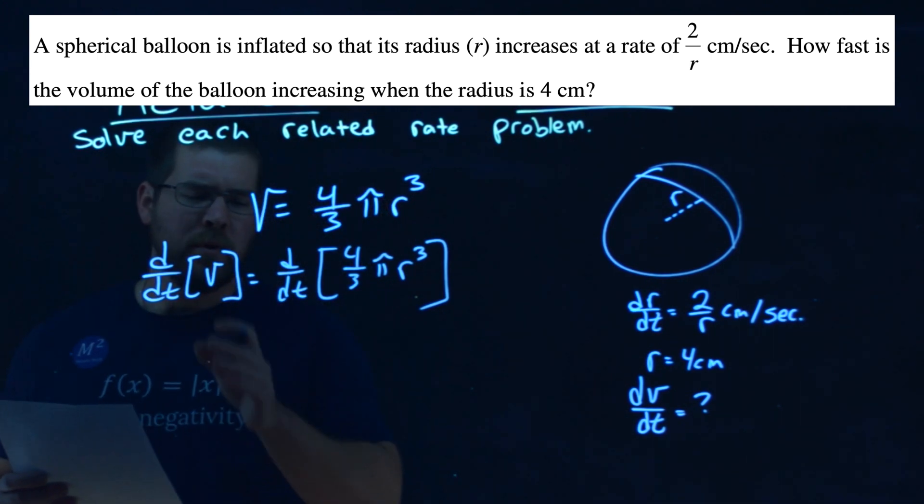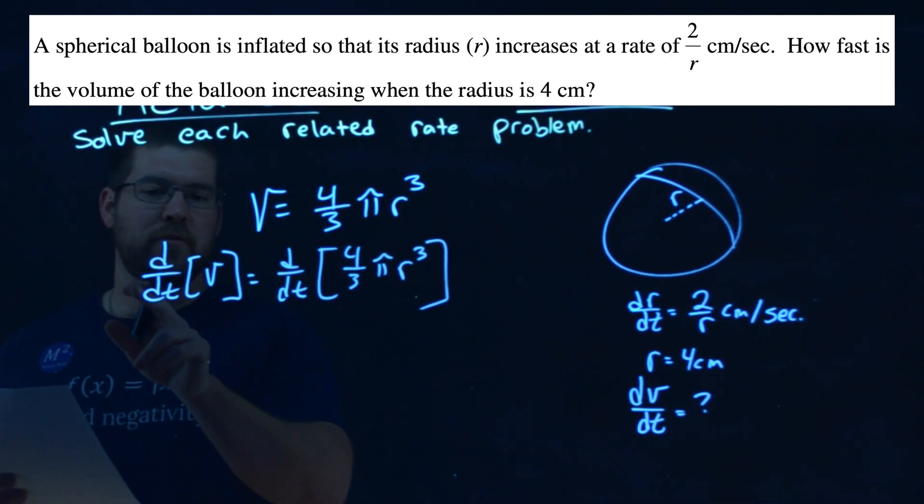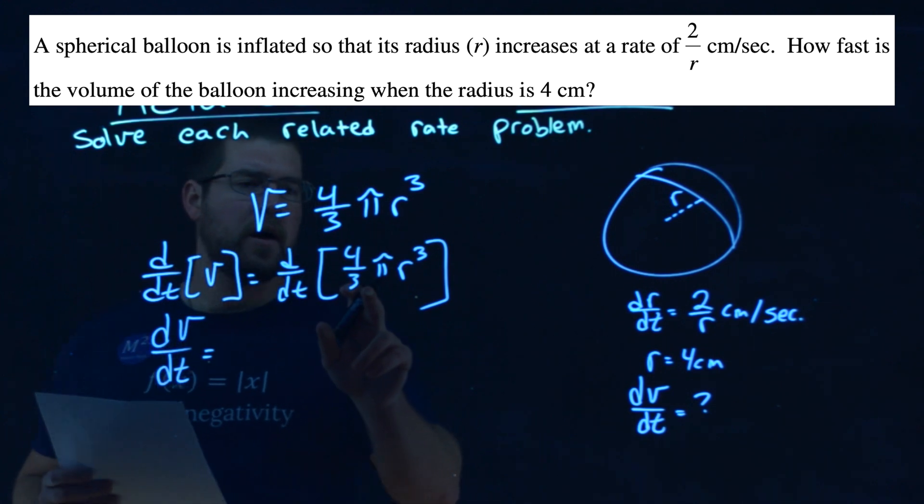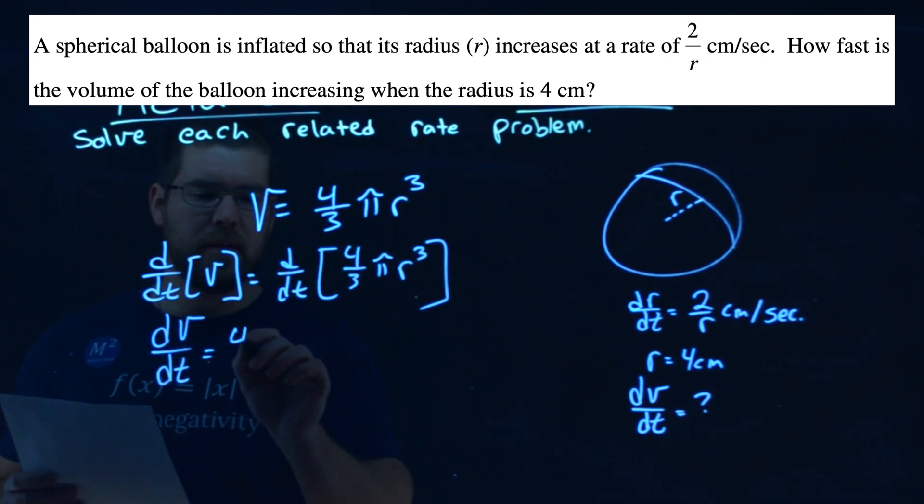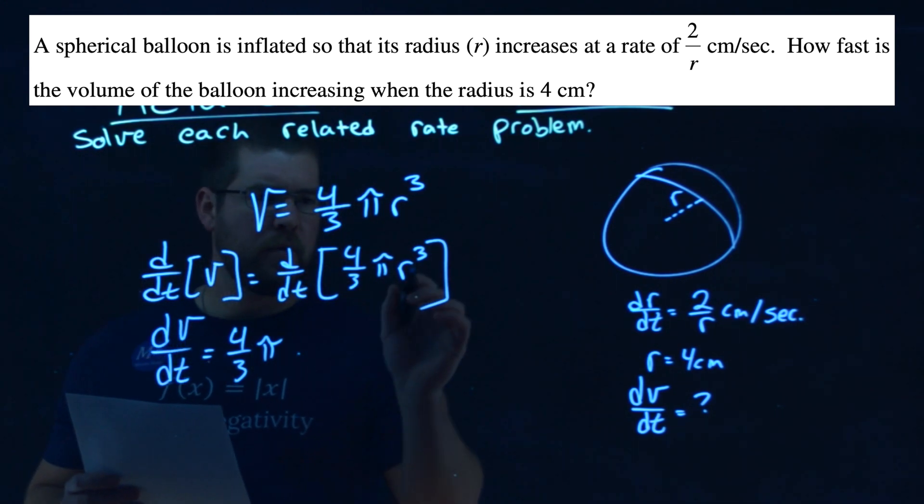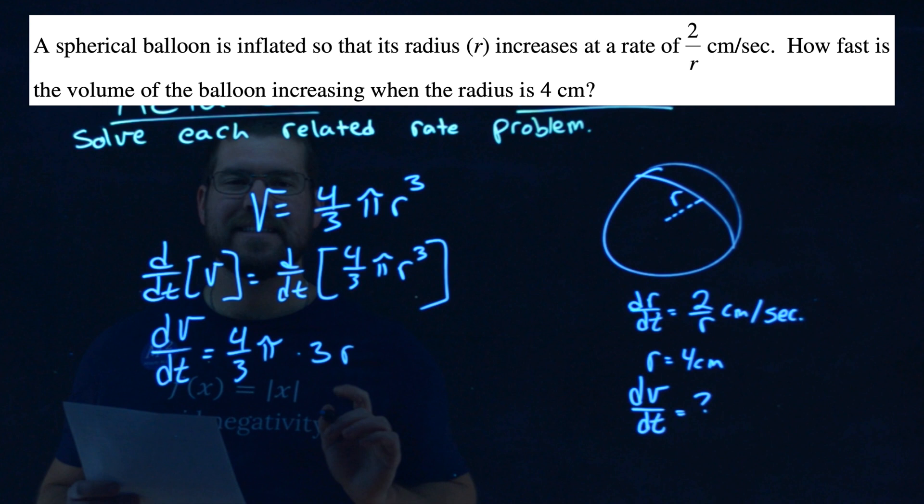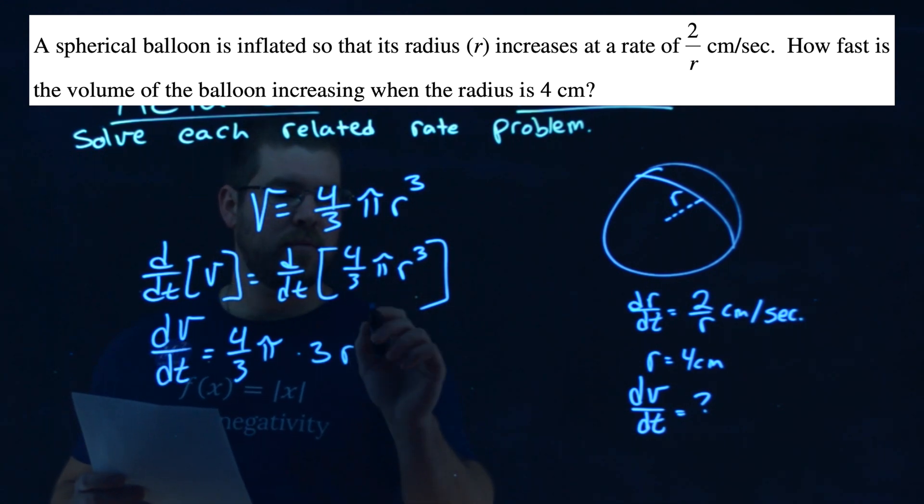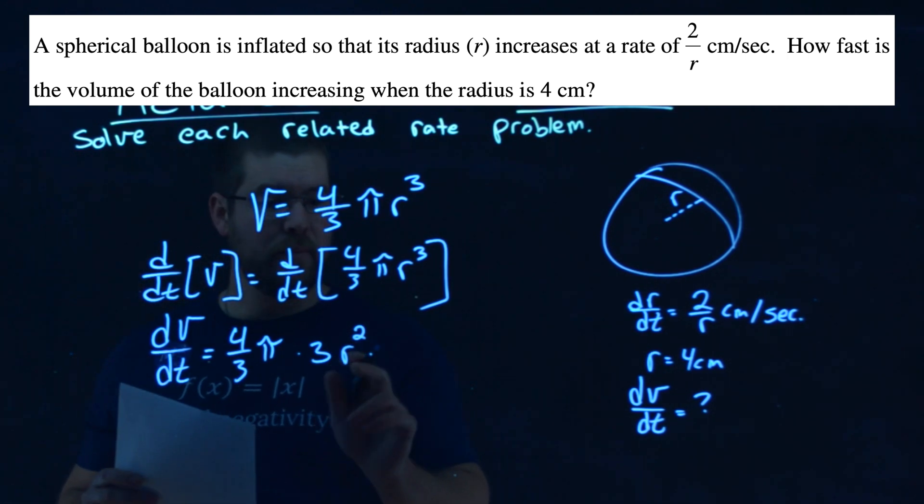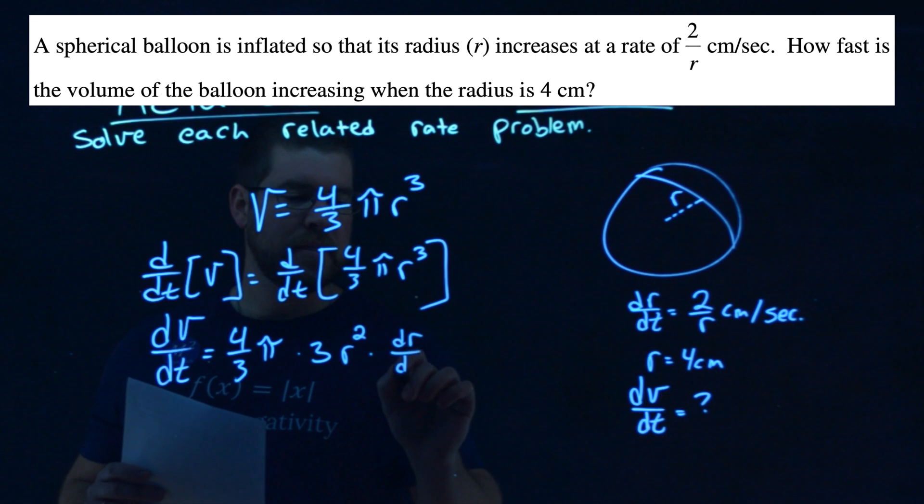Now, what's easy on the left-hand side, the derivative with respect to time of the volume is just dv dt. Here we can pull out our constants, 4 thirds pi, and let's derive r cubed with respect to time. Power rule brings down the 3, r stays the same, subtract the exponent by 1 to get 2. Now, that's the chain rule going on, derive r with respect to time, and that's dr dt.